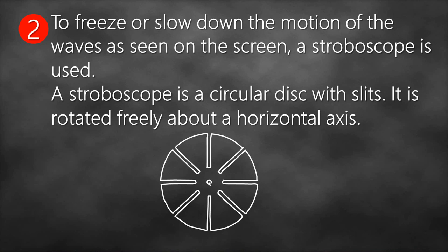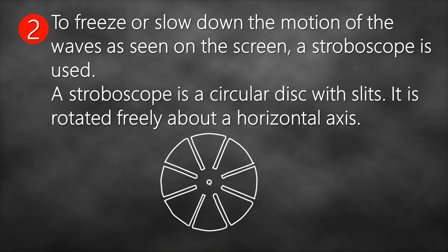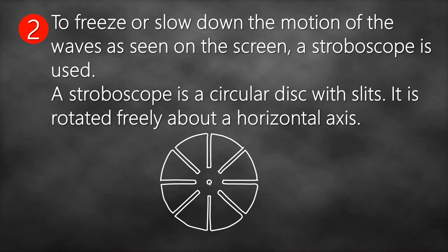When you rotate the stroboscope, the motion of the stroboscope relative to the motion of the waves creates an optical illusion that makes the waves appear stationary, so that you can easily study them. That's why we use the stroboscope — it freezes or slows down the motion of the waves as seen on the screen.